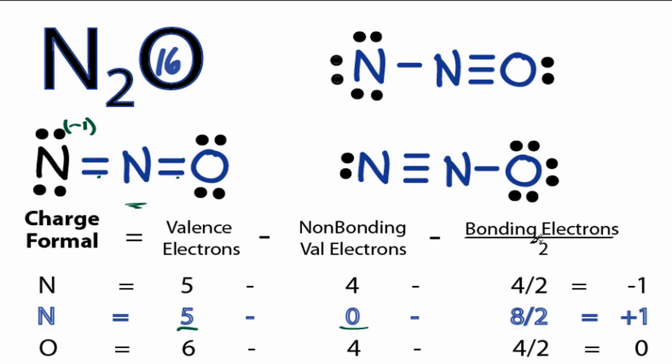8 bonding valence electrons divided by 2. 5 minus 4 is plus 1. So we have a formal charge of plus 1 on this nitrogen. The formal charge on the oxygen is 0.